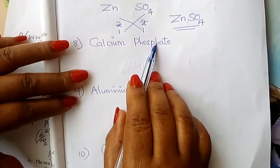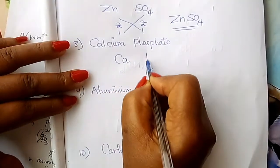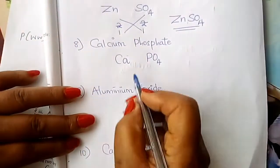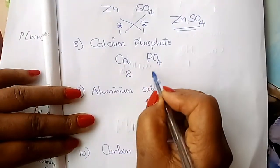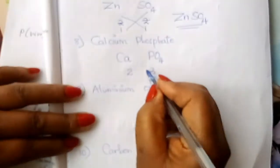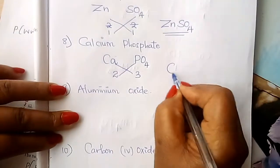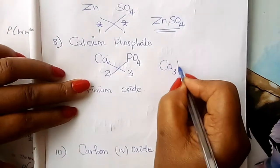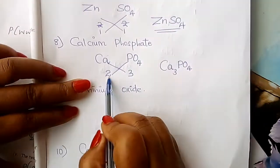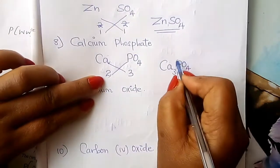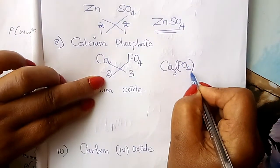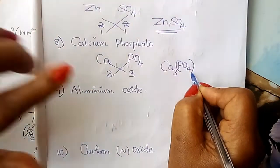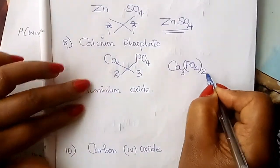Calcium phosphate: calcium is Ca; phosphate is PO4. Ignore the charges. Calcium has valency two; phosphate has valency three. Interchange: Ca takes three, so Ca3. PO4 is a radical taking two — more than one — so put it inside brackets and write two outside. The formula is Ca3(PO4)2.